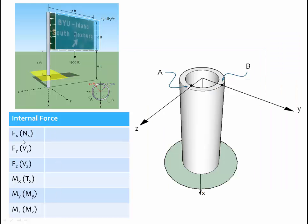The first internal force is in the x-direction — an axial force. Looking at the cross-section where A and B are located, there is an axial force acting down the post equal to the weight of the sign, 1,500 pounds. Transferring that weight through the post to the cross-section, the 1,500-pound axial load acts in compression on the cross-section.